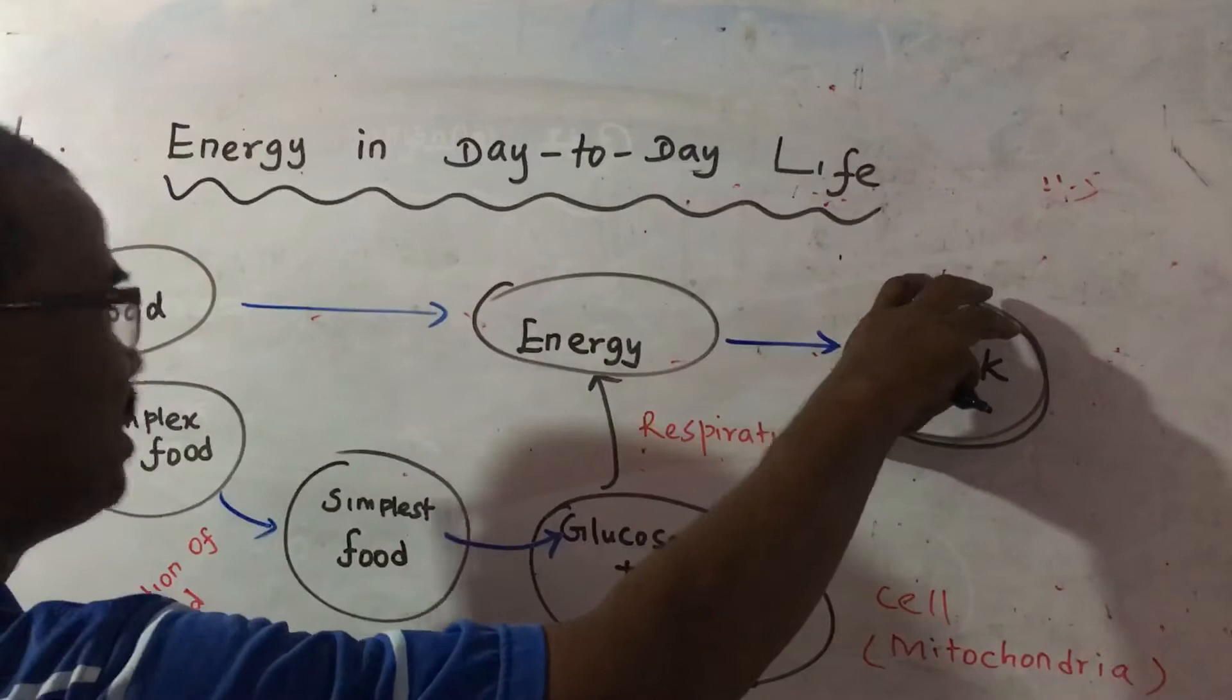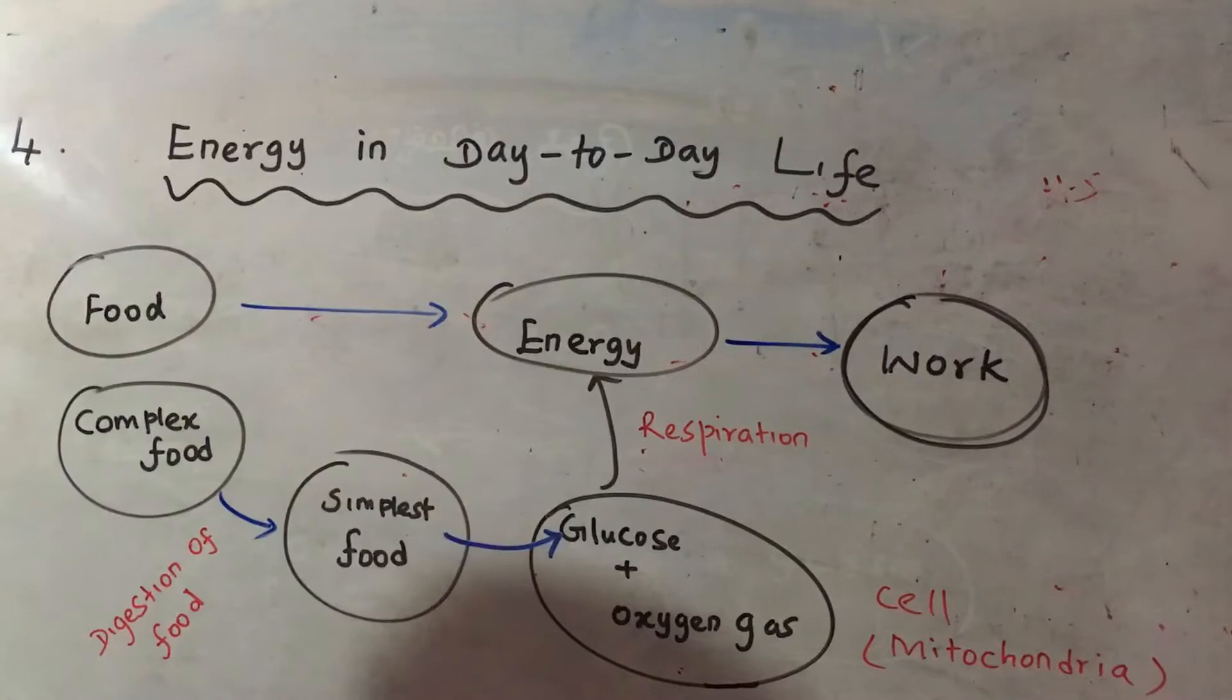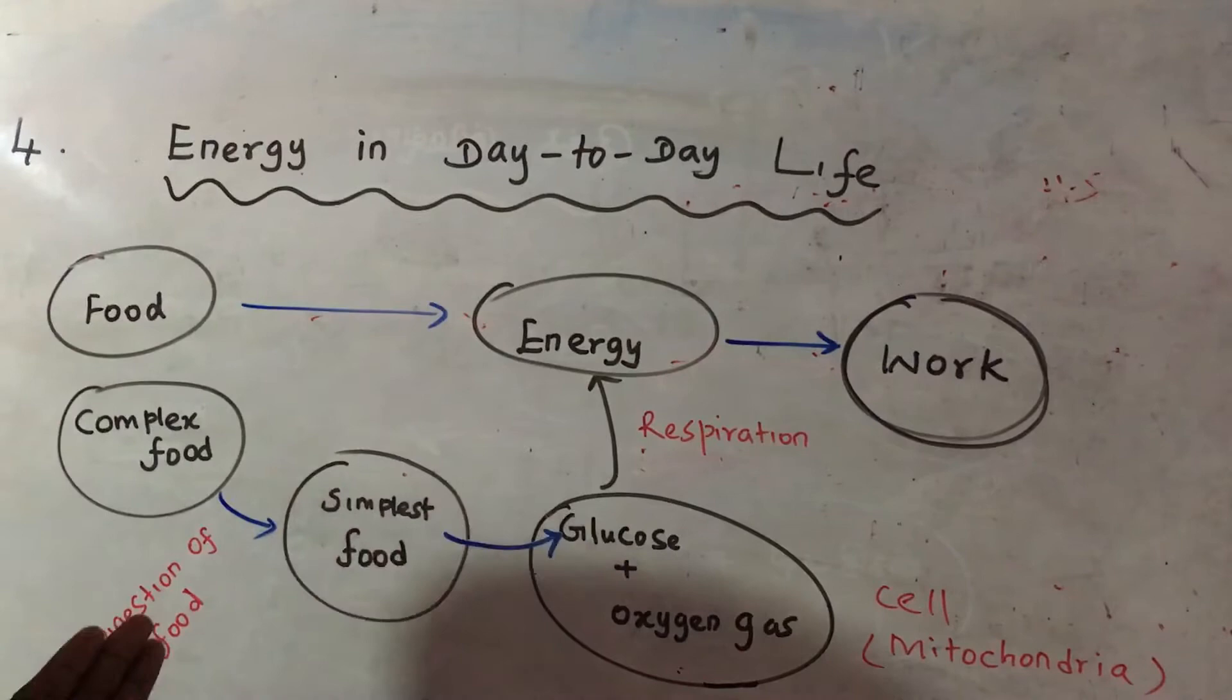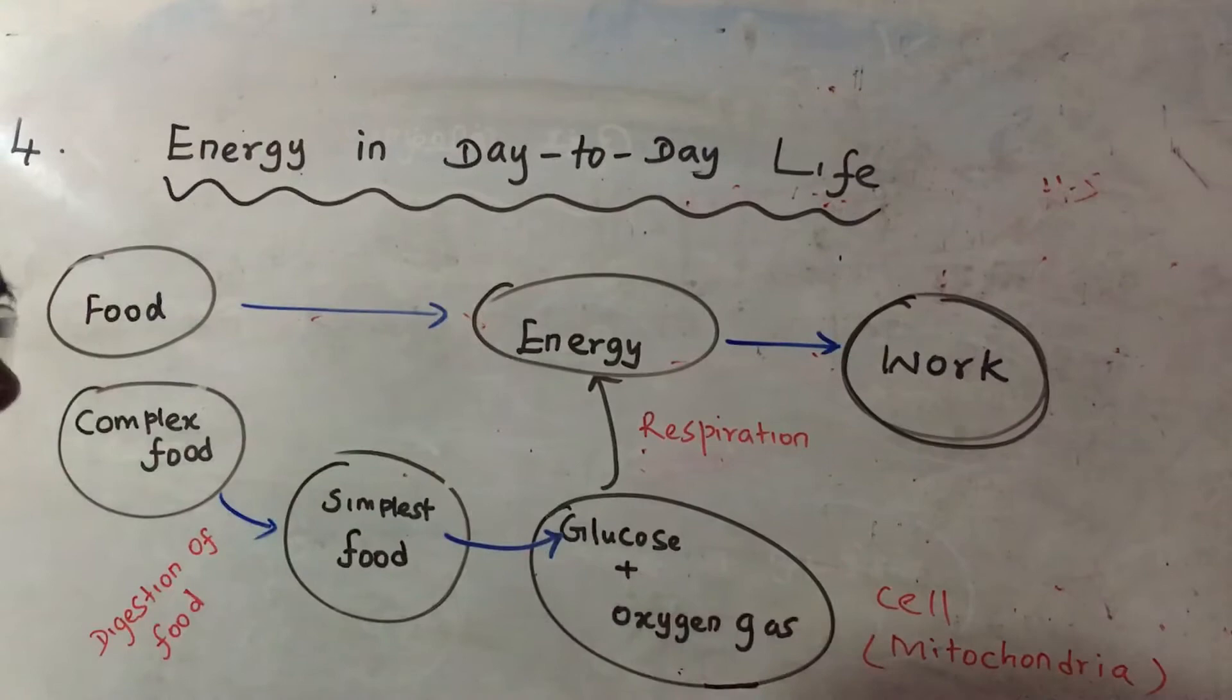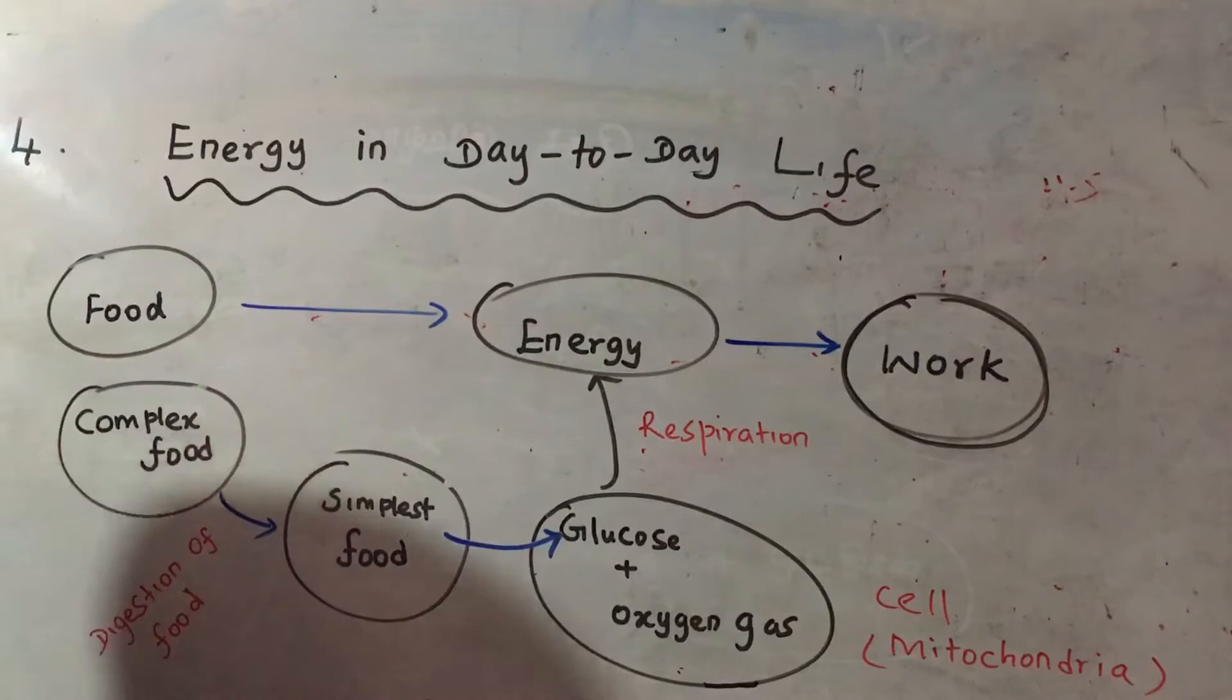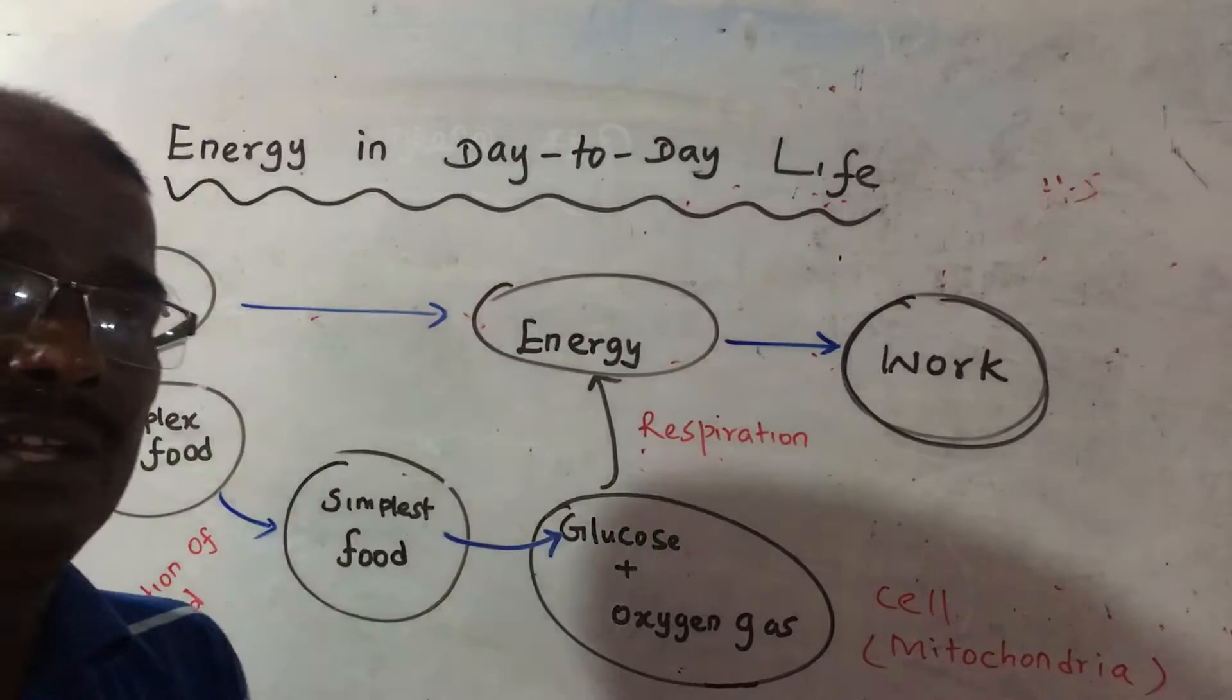Normally we take food, complex food, because there are many complex organic compounds in that food. Complex food is insoluble in water and cannot be absorbed in the blood. That is converted into simplest form in our digestive system by the digestion of food. Now, this simplest food has the ability to dissolve in water and be absorbed in the blood.